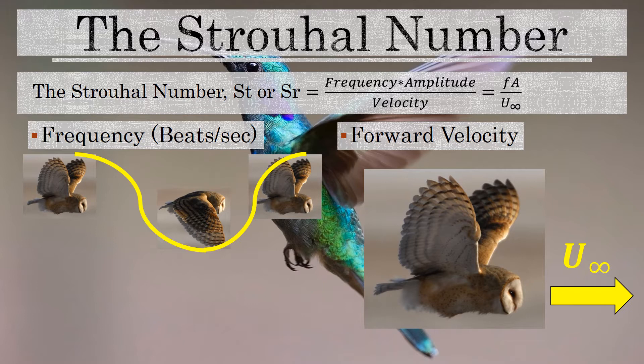When we talk about frequency, we're really talking about wing beats per second. As a bird is flapping its wings, it flaps them in a downward stroke and then pulls them up in an upward stroke. A single wing beat is a down stroke and an up stroke — it's the time it takes to return to the same position in the cycle. For our example, you can see the owl, and the yellow line shows the path the wing tip follows to illustrate a single wing beat.